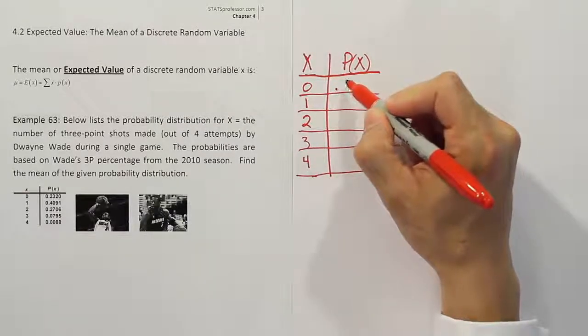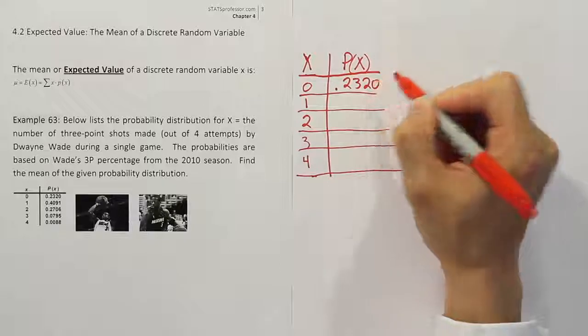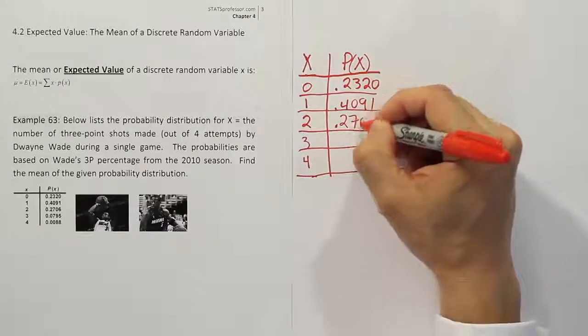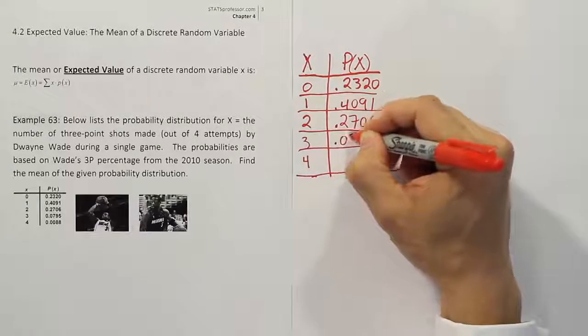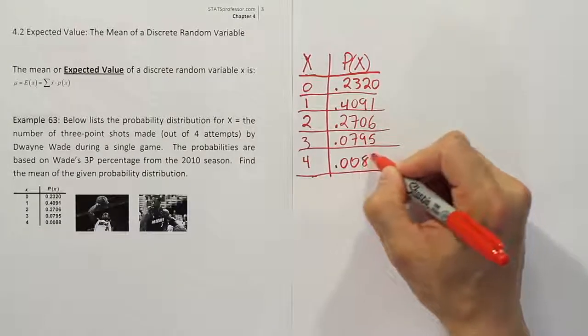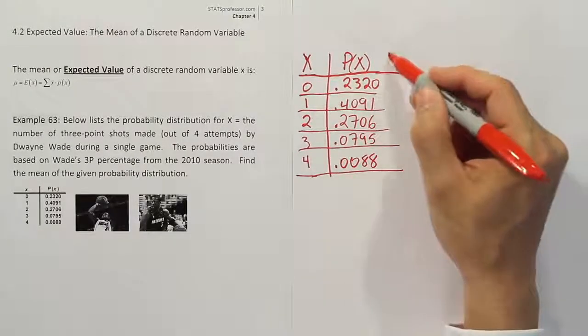According to the problem, it's 0.2320 for the first one, it's 0.4091, 0.2706, 0.0795, and lastly, it's 0.0088. Okay, so there are our probabilities.